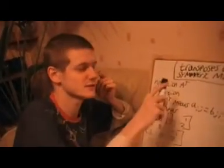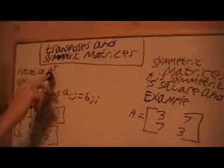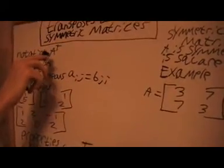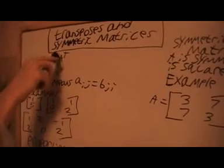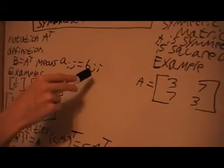In this video, we're going to look at transposes and symmetric matrices. This is a notation for the transpose of a matrix. It's A and a T above it. And the definition is B equals A^T means A_ij is equal to B_ji. In other words, what this means is the rows become columns and the columns become rows.